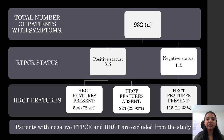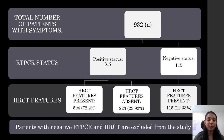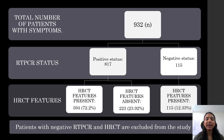Here are the results. Out of 932 patients, 817 had RT-PCR positive status and 115 had RT-PCR negative status. Out of the 817 RT-PCR positive patients, 72.2% — that is 594 patients — had HRCT features positive, and 223 patients, which is 23.9%, had HRCT features absent. In conclusion, 115 patients out of a total of 932, which is 12.33%, had negative RT-PCR status while their HRCT status was positive. Patients with both negative RT-PCR and negative HRCT are excluded from the study.